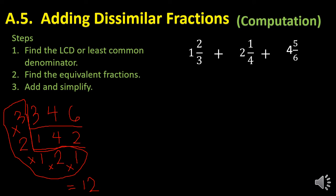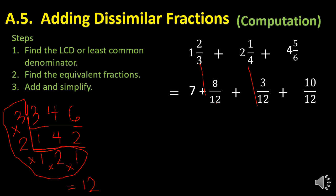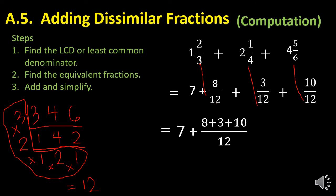We simply add all the whole numbers one, two, and four, giving us seven. Then we find equivalent fractions: for two thirds, twelve divided by three is four, times two is eight — so eight over twelve. For one fourth, twelve divided by four is three, times one is three — so three over twelve. For five over six, twelve divided by six is two, times five is ten — so ten over twelve. So we have seven and the fraction eight plus three plus ten, all over twelve — giving us seven and twenty-one over twelve.